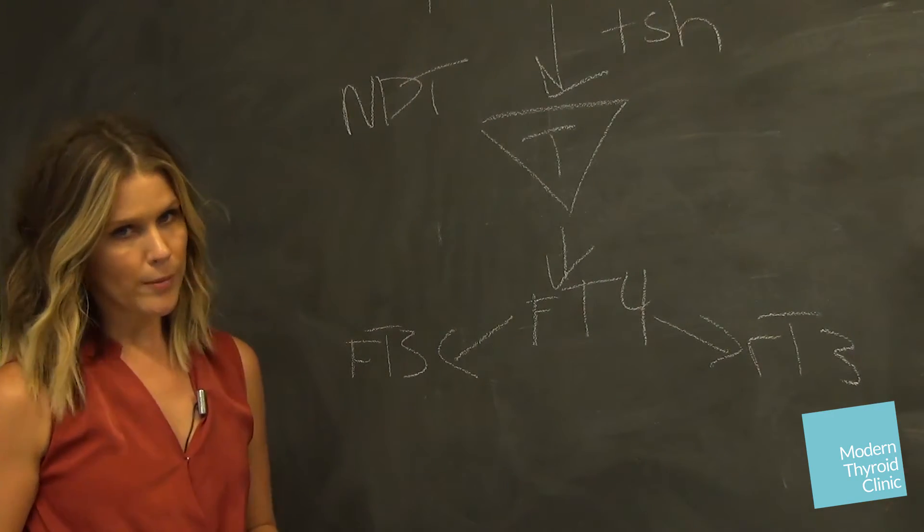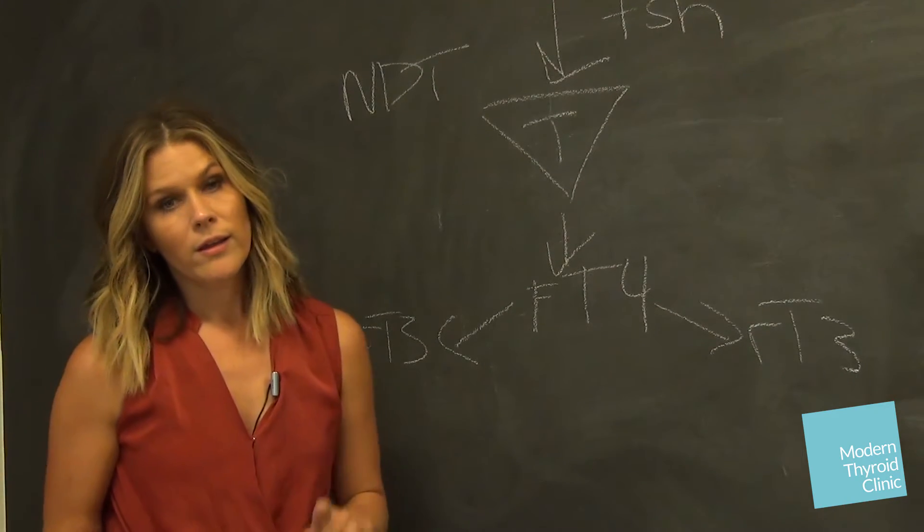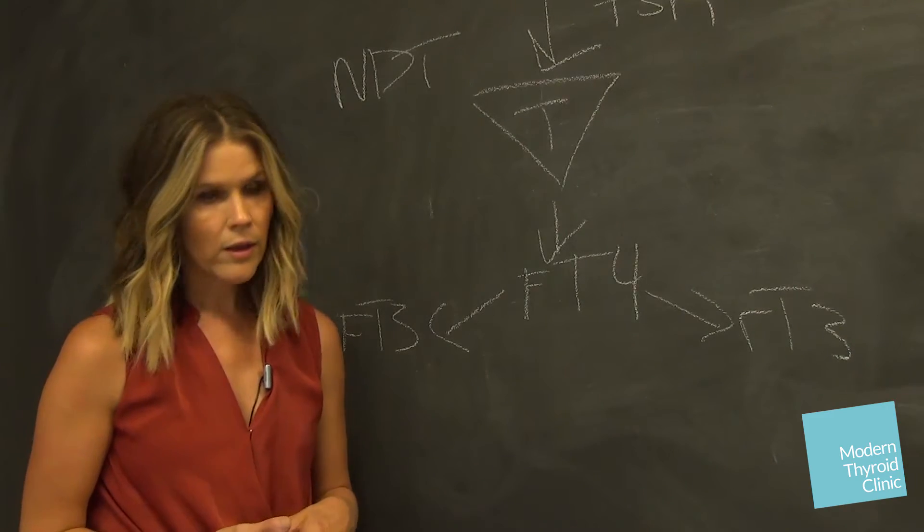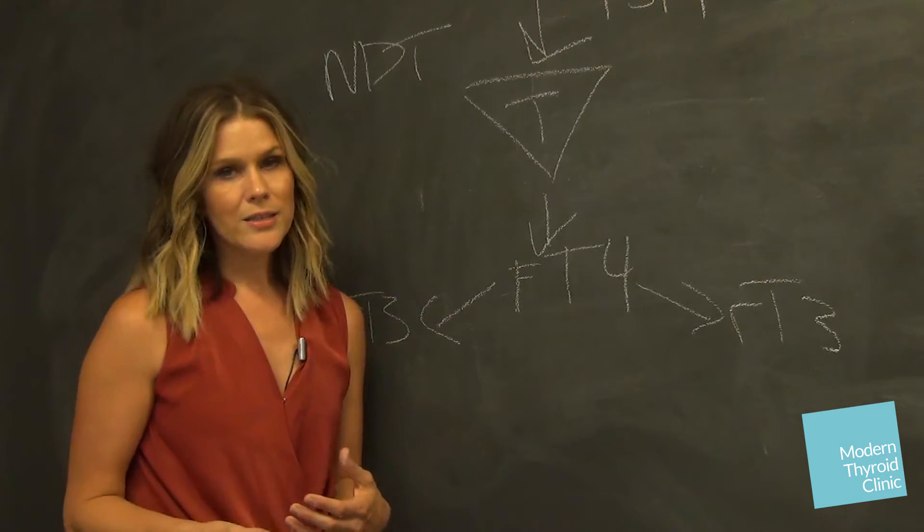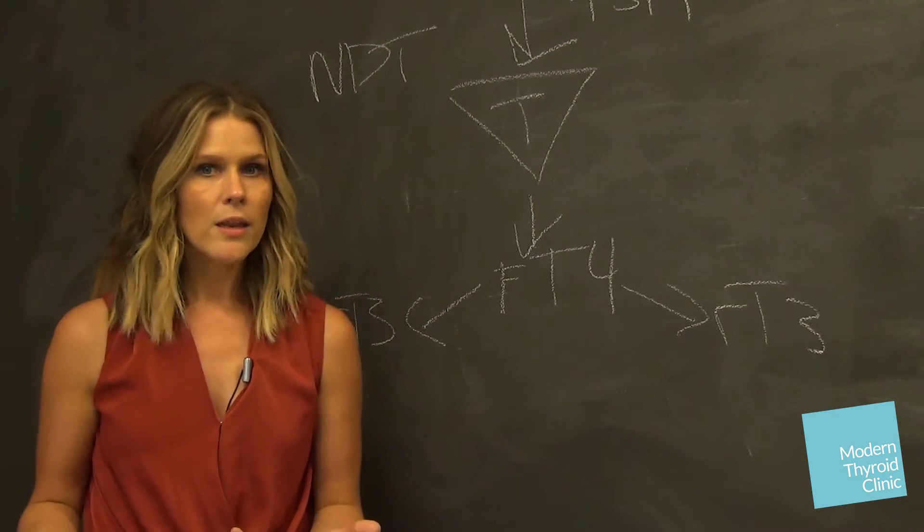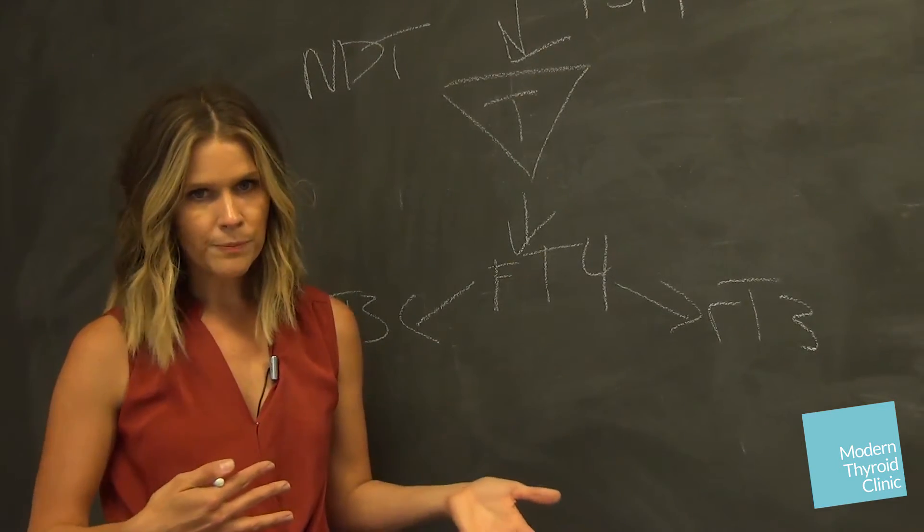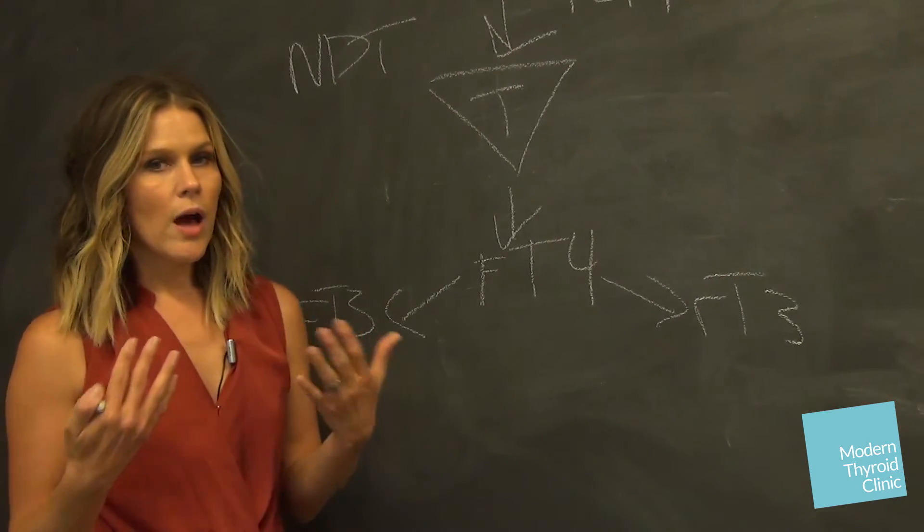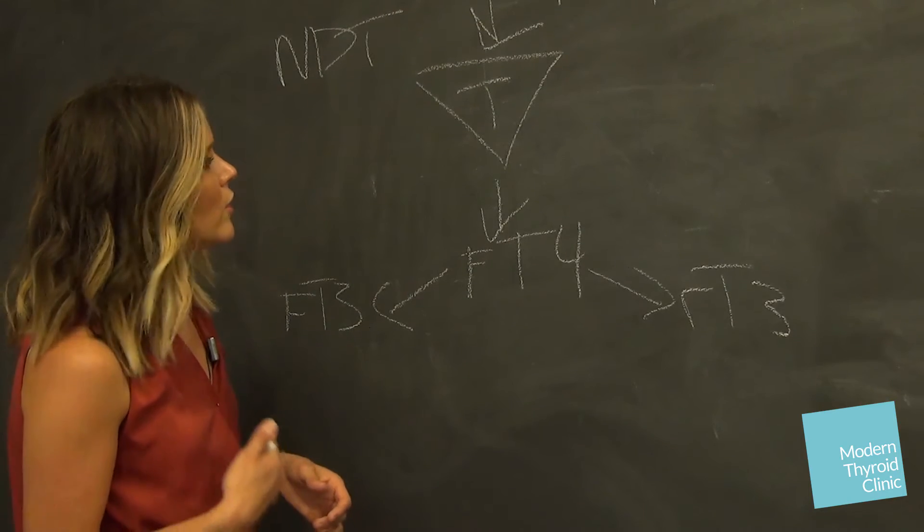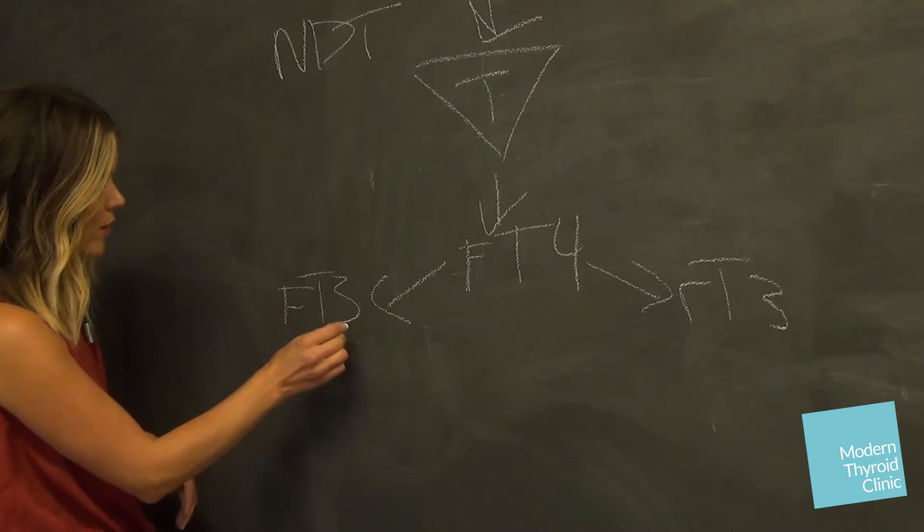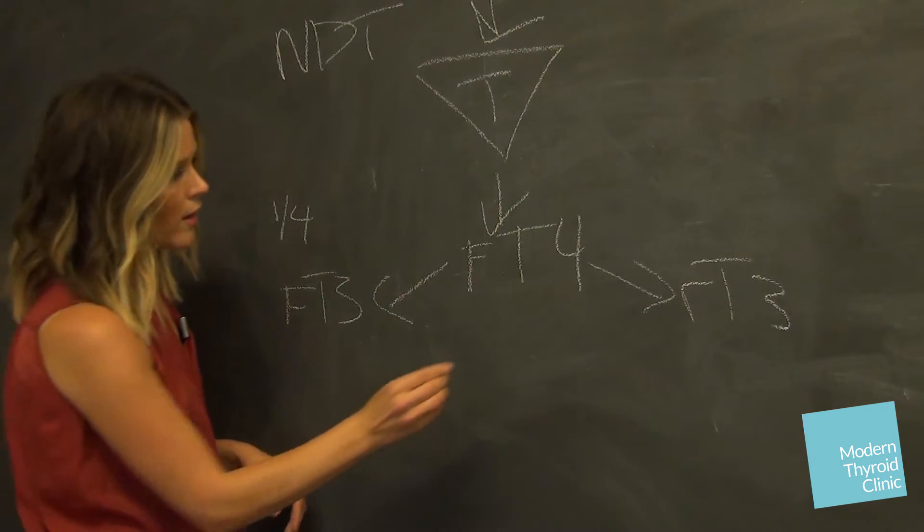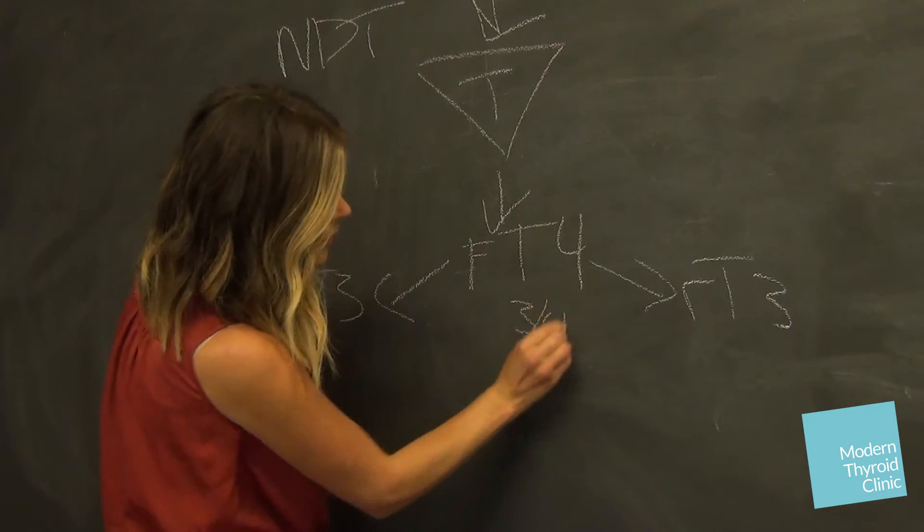So these are drugs like Armour, Naturethroid, NP thyroid, Westhroid, WP thyroid. All of these are desiccated pig thyroid gland. So obviously they're not man-made in the realm that they come from an animal and they're actually supplying us with thyroid gland from someone else. So in that we get part T3, really about a quarter of T3 and about three quarters of T4.